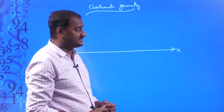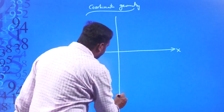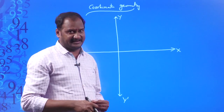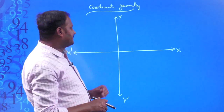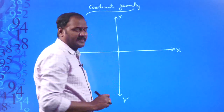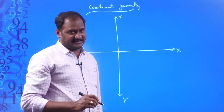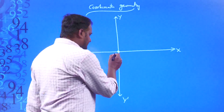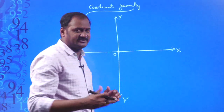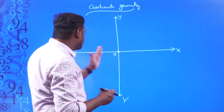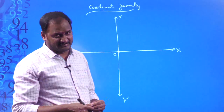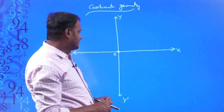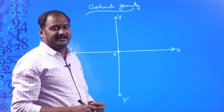These two are two perpendicular number lines that intersect at a point called the point of intersection. With reference to this point, if you take 0 here, from 0 towards right on x-axis is the positive number line, and from 0 towards left is the negative x-axis. Similarly, from origin towards up is the positive y-axis, and from origin towards down is the negative y-axis.